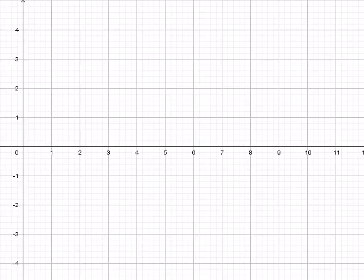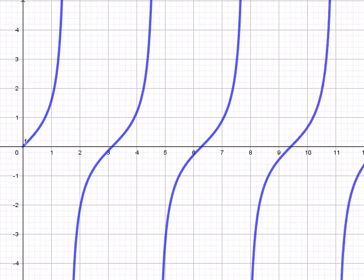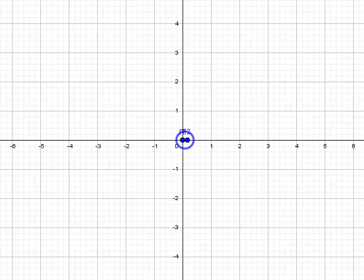One example of wrapping around at infinity that immediately comes to mind is the tangent function, which repeatedly zips off toward positive infinity as the angle increases, then somehow wraps around and returns from negative infinity.